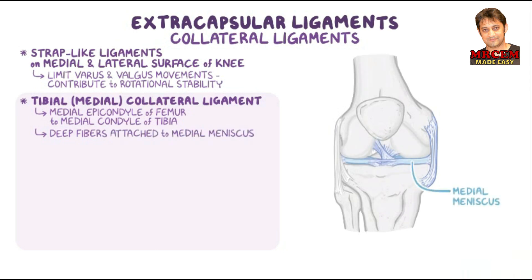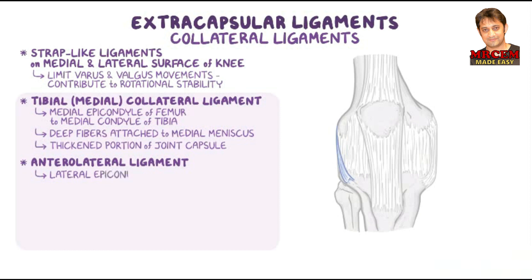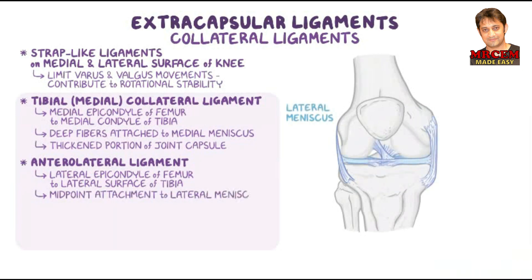The tibial collateral ligament is a thickened portion of the medial joint capsule and is mirrored by a lateral joint capsule thickening of recent anatomical interest called the anterolateral ligament. The anterolateral ligament of the knee generally inserts from the lateral epicondyle of the femur to the lateral surface of the tibia, and also has a midpoint attachment to the lateral meniscus.